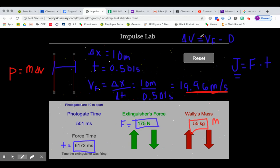To see some kind of trend in our data, you're going to continually change the force applied to Wally and the mass of Wally over a few different trials.